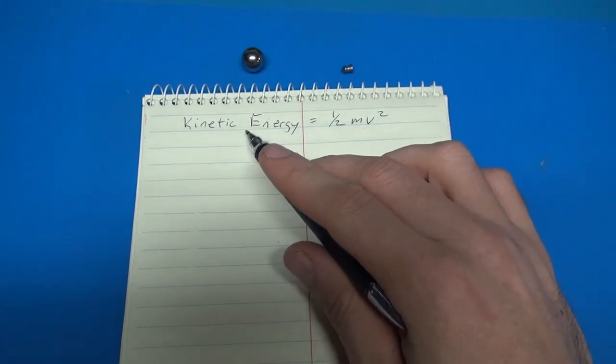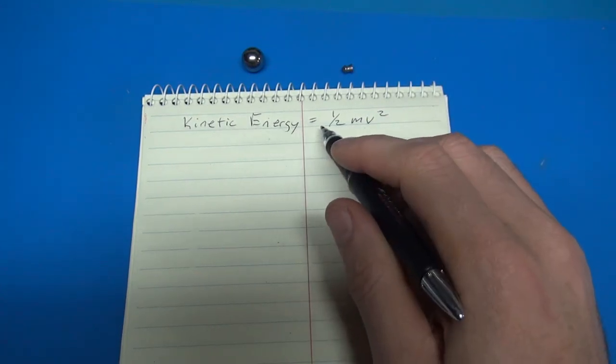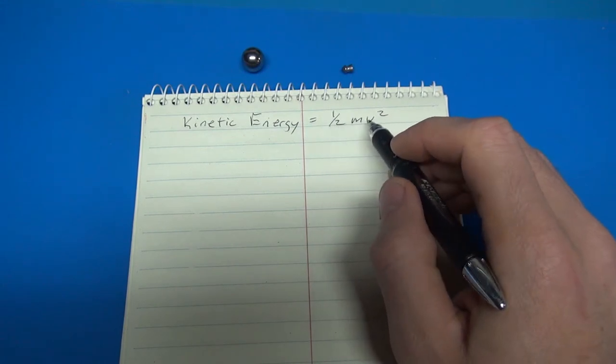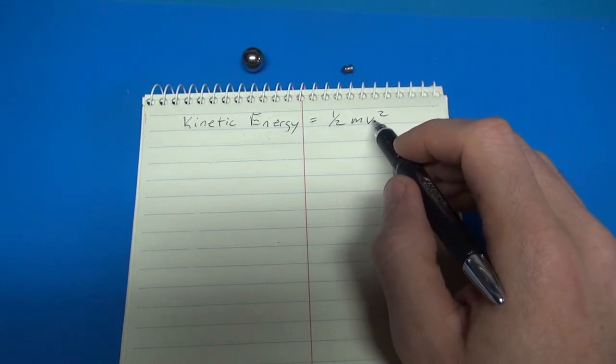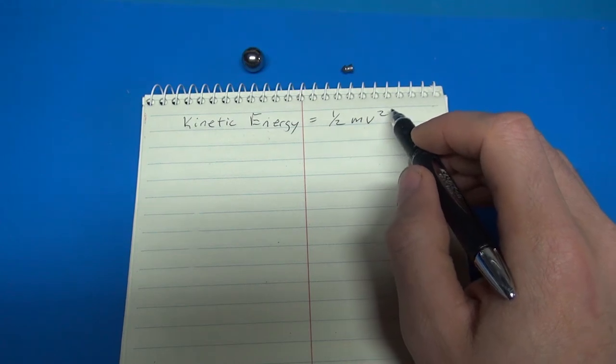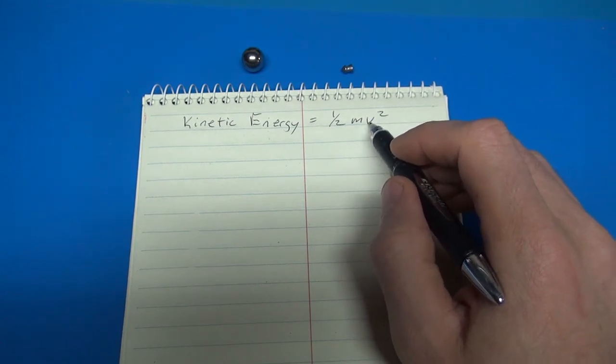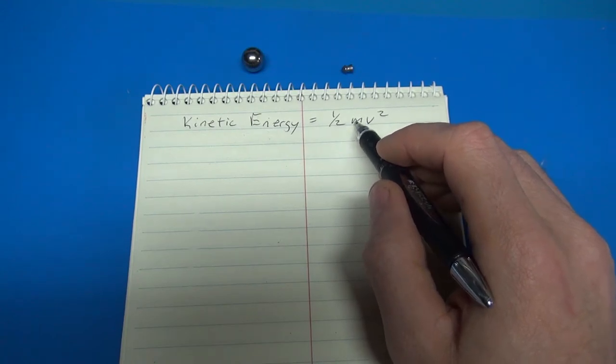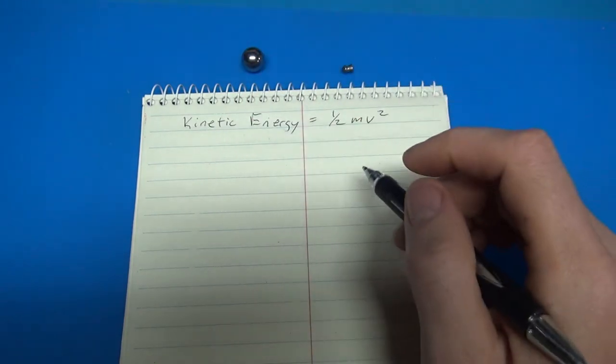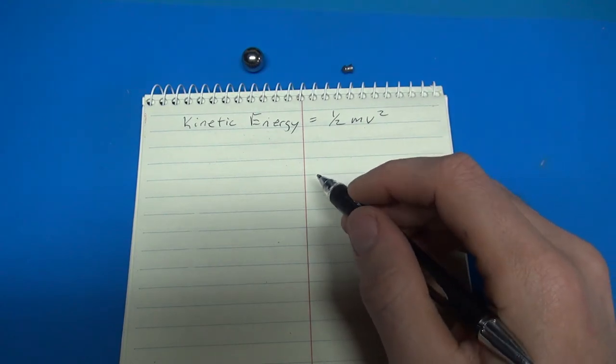So the equation to figure out kinetic energy, in case you forgot it from high school, is one half times the mass times your velocity squared. So we know the velocity because the camera actually records that. And we know the mass because I can weigh these bullets. So we should be able to pretty easily figure out the kinetic energy.